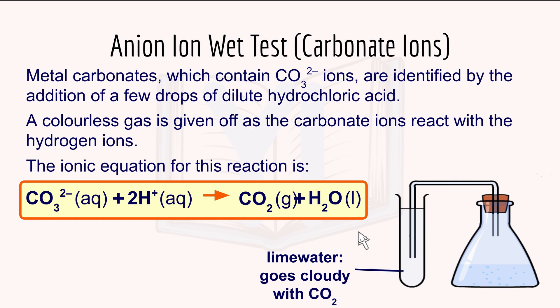For the anion wet test for carbonate ions: metal carbonates containing CO3²⁻ ions are identified by adding a few drops of dilute hydrochloric acid. A colorless gas is given off as the carbonate ion reacts with hydrogen ions. The ionic equation is: CO3²⁻ + 2H⁺ → CO2 (g) + H2O (l). The colorless gas given off is CO2, which you can test by bubbling through lime water.